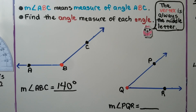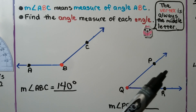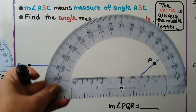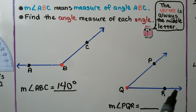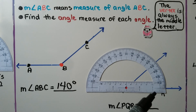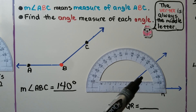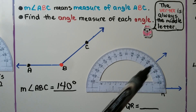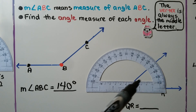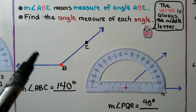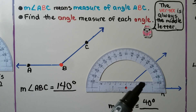We need to find the measure of angle PQR. The angle is opening to the right, so we use zero on the right side of our protractor. We line vertex Q up with the center point, then line up that part of the ray with the zero on the right side. The ray passes through both 40 and 140, but since this angle is less than a right angle, it can't be 140 — we use the inside scale and read 40 degrees.